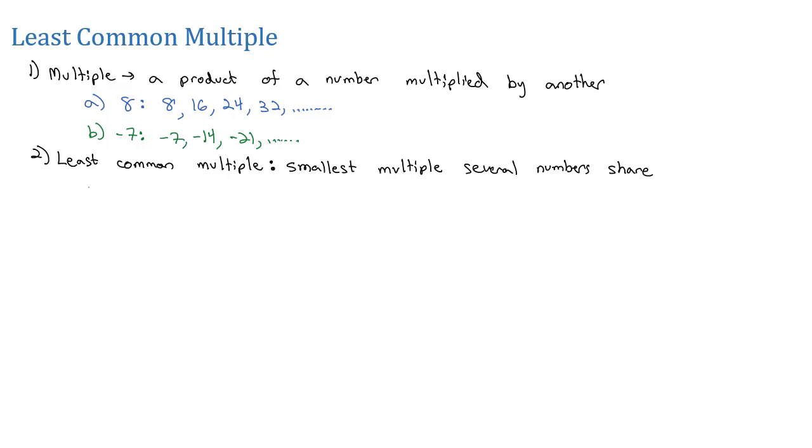So, for example, 15, if I were to list multiples of 15, they would be 15, 30, 45, 60, 75, 90, 105, 120, and I could keep going. And then I could list multiples of maybe the number 20. Multiples of 20 would be 20, 40, 60, 80, 100, 120, 140, and I could keep going.